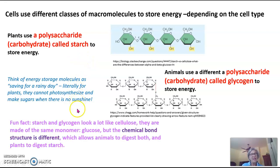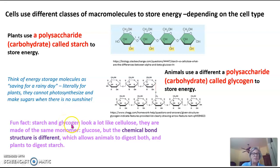Both starch and glycogen look a lot like cellulose. They're both made of the same monomer — glucose — but the chemical bond structure is different, which allows animals to digest both starch and glycogen, and plants can digest starch.